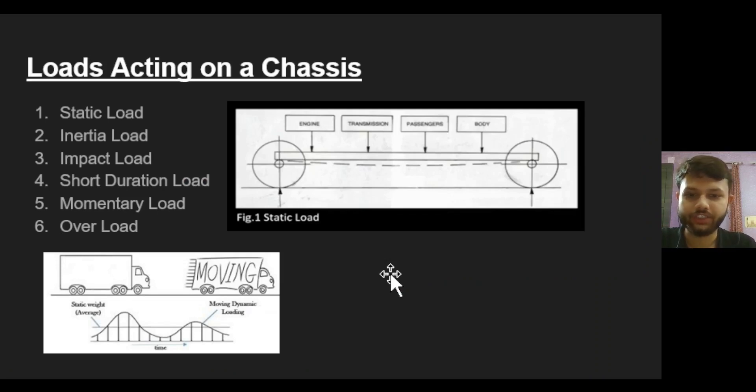The loads acting on a chassis: there are many loads acting on a chassis. First is the static load, which is basically the load due to other parts of the vehicle such as your engine, body of the car, transmission parts, etc. Inertia load is when your car is moving and the brakes are applied. Impact load is due to the collision with another vehicle or a wall. Short duration load is when you cross a broken patch of land. Momentary load is caused while turning or moving on a curved path. Overload, as the name suggests, is when the load is beyond the design capacity of your vehicle.